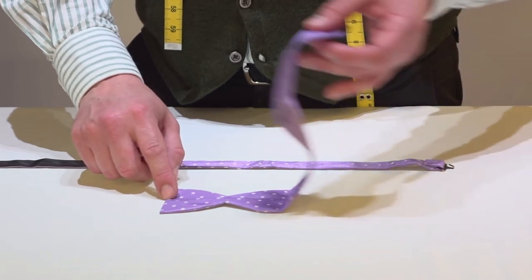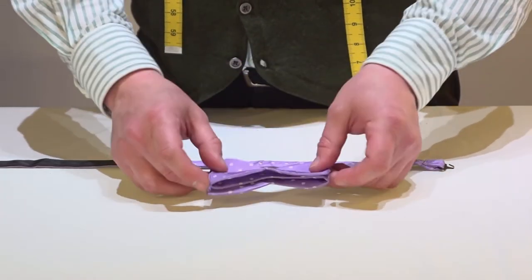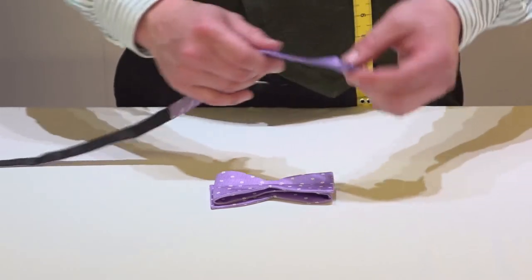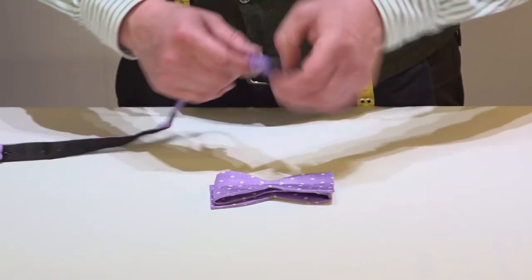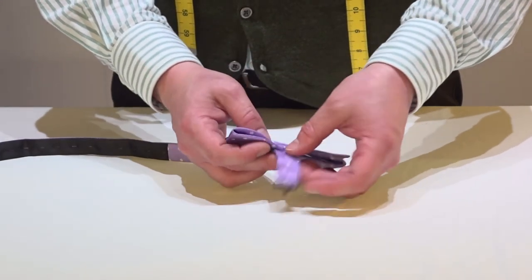Fold the bow twice upon itself, and take the band. Tie it once across the front centre of the bow.